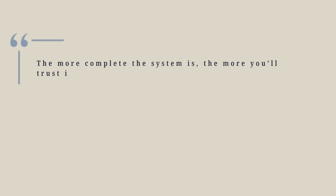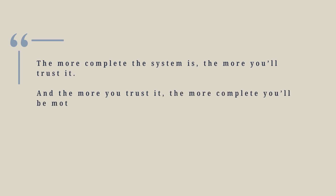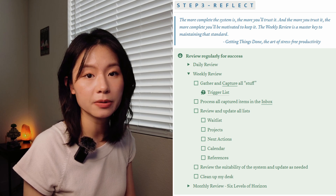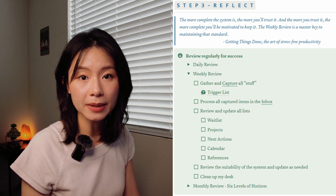Here is a quote from the Getting Things Done book: "The more complete the system is, the more you'll trust it. And the more you trust it, the more complete you'll be motivated to keep it. The weekly review is the master key to maintaining that standard." The weekly review is your opportunity to clear your mind, deal with everything that's piled up during the week, and make sure your system is current and organized. I've mapped out the weekly review as a checklist under Step 3, Reflect. We'll go through each database together.